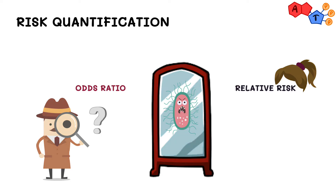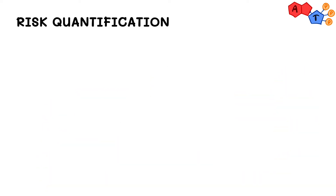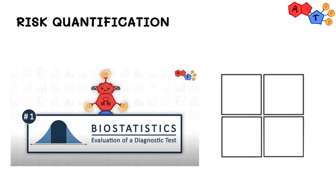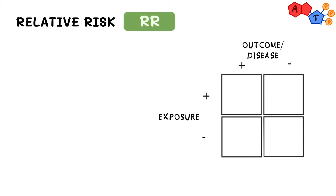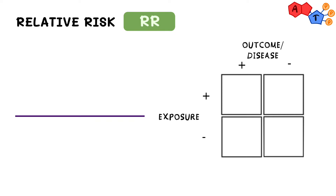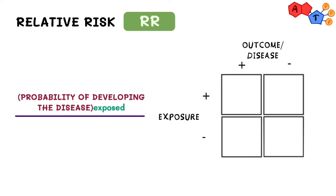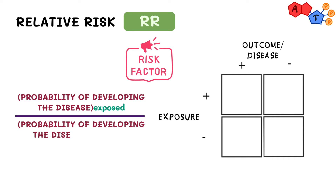Let's take a look at their formulas, with our trusty 2x2 table from our video on how to evaluate a diagnostic test. We'll have to modify it a little bit though — we'll put exposure on one side and outcome on the other. Starting with relative risk: it is a proportion. Its numerator is the probability of developing the disease in a population exposed to a certain experiment or risk factor, and the denominator is the probability of developing the disease in a population that is not exposed.